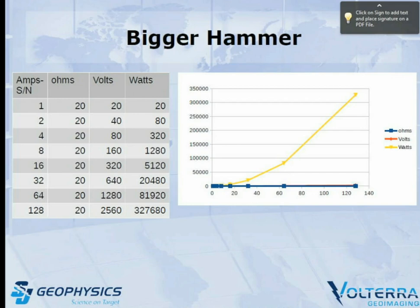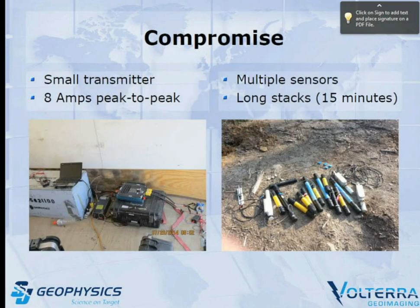So there's the bigger hammer approach — that's an easy one. If we have a 20-ohm loop transmitting at 8 amps, 160 volts, it takes about a 1.2 kW transmitter, which I can run with a little 2 kW Honda I can easily lift onto the back of a truck. If we want four times that signal, we're up to 32 amps, needing a 640-volt transmitter, and our wattage jumps to 20 kW — we'd need a 30–40 kW generator. There's a little bit more than I can lift into the back of a pickup. So we did a compromise: a small transmitter at about 8 amps, multiple sensors — coils and magnetometers — and stack for about 15 minutes.